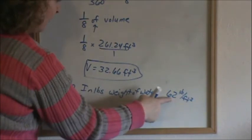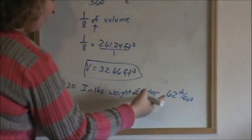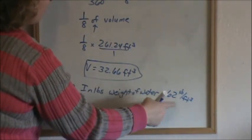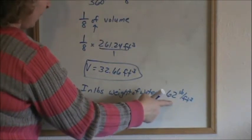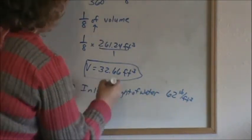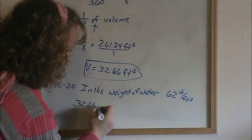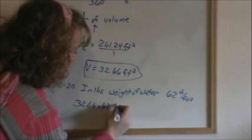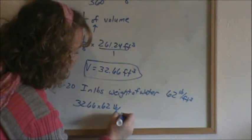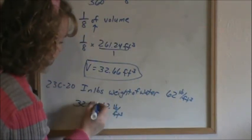So the first cubic foot weighs 62 pounds. The second cubic foot weighs 62 pounds. The third cubic foot weighs 62 pounds. And we do that all up to 32, which tells us that we have to take 32.66 and multiply it by 62 pounds per cubic foot. I forgot my units over here.